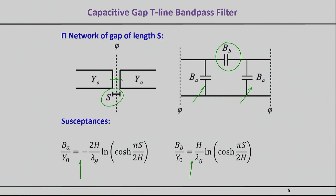The susceptance B_A — which is the susceptance of this capacitor — is a function of h (the package height), λ_g (the guided wavelength), and s (the gap spacing). Similar equations apply for B_B. When we synthesize the filter, we will find the values of C_A and C_B. Once we know those, we use these equations in reverse to find the gap s. The gap s is the physical implementation unknown, while h will be constant.